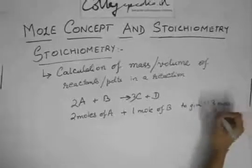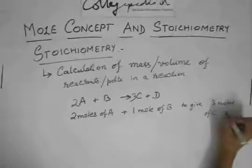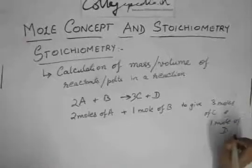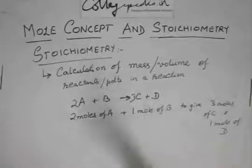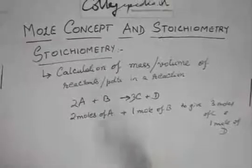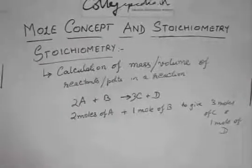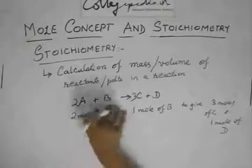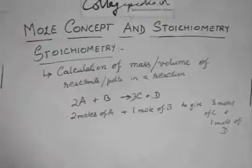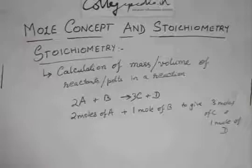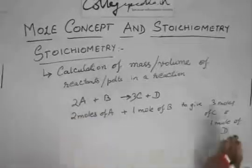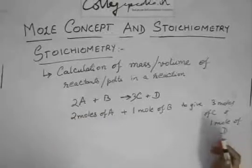3 moles of C and 1 mole of D. And this is constant, always. 2 moles of A will always react with 1 mole of B to always give 3 moles of C and 1 mole of D because this ratio has to be maintained or is always maintained constant. So if this is constant, then we can use, if we know the weight or the number of moles of A, we can find the number of moles of C, D, B, anything.